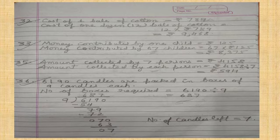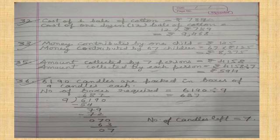Question thirty-six: Six thousand one hundred ninety candles are to be placed in boxes of nine candles each. How many boxes will be required and how many candles will be left? Divide six thousand one hundred ninety by nine. The answer is six hundred eighty-seven boxes required, and the remainder is the number of candles left over.